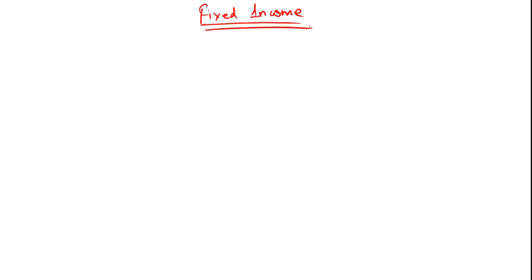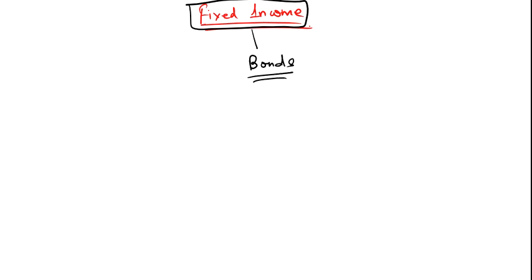Welcome to RBI. We are continuing with our fixed income. Earlier we studied about the calculation of zero coupon bonds and coupon bearing bonds — how to calculate the price of a bond. Now we are going to find out some basic terminologies which we are going to use in fixed income. Our focus will be completely on bonds, and all the terminologies will be related to bonds.